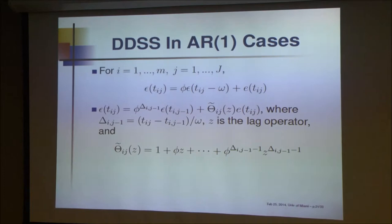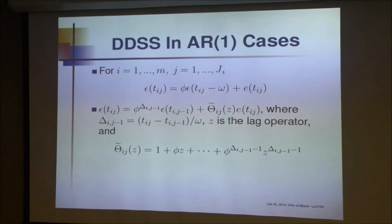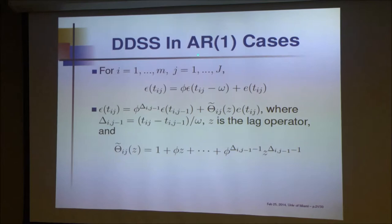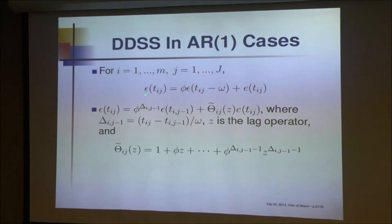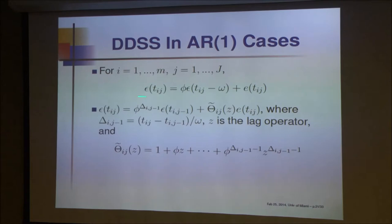For the AR(1) case, we still use the original CUSUM chart but adjust the control limit based on in-control data using a numerical bootstrap algorithm. That chart can be applied in very general situations, but may not be efficient because we're not using full distribution information. Simulations basically confirm that our methods perform well. Now let's come back to the Framingham Heart Study example. This is a big study and I only focus on a small portion, specifically concerned with stroke.